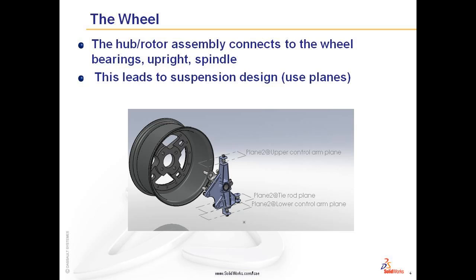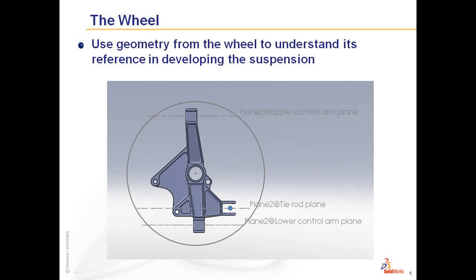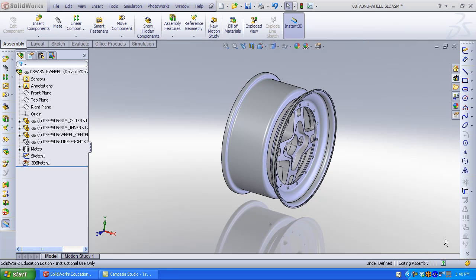We want to make sure we recognize that the spindle will contain planes in the upright, planes to the tie rod, and the upper and lower control arm. It is important to use construction geometry, axes, and planes. Through a sketch, we want to keep track of the circular diameter of the wheel to understand its geometry in referencing the development of the suspension. So let's start with the wheel assembly.